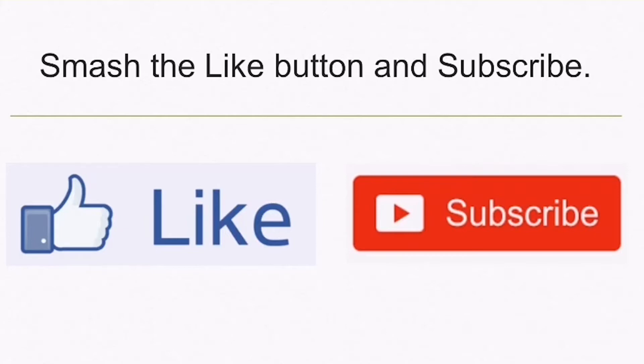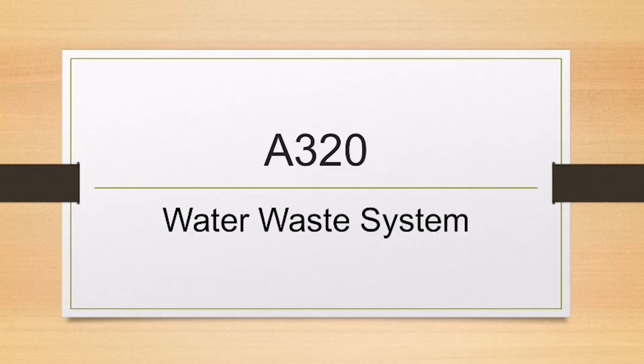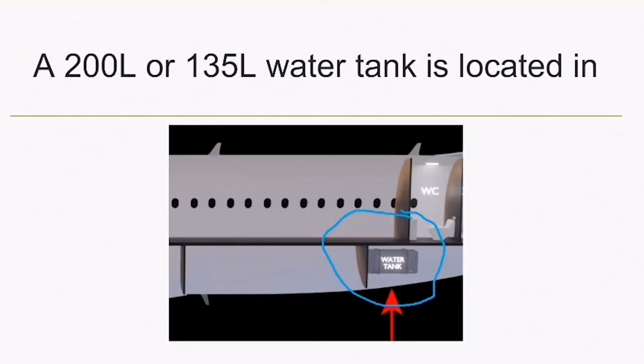Let's dive in. As you can see, the water tank is located at the aft cargo compartment behind the wall. The tanks are pressurized from the aircraft bleed systems via the engines or the APU.